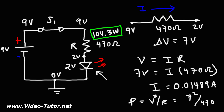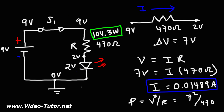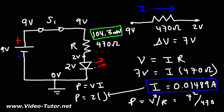To calculate the power consumed by the LED, we know the voltage across the LED is two volts, and we know the current flowing through it. Because this is a series circuit, the current flowing through the resistor is the same as the current flowing through the LED. Using the power equation P = V × I, we have two volts multiplied by 0.01489 amps, which gives 0.02978 watts. Converting to milliwatts, this LED is consuming 29.8 milliwatts.